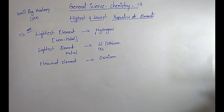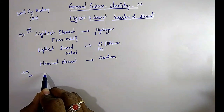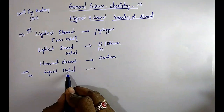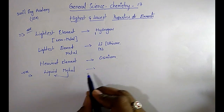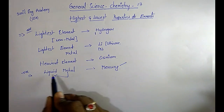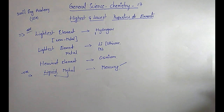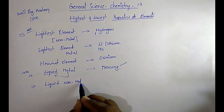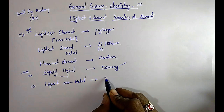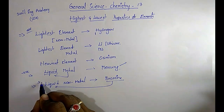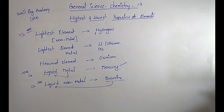Which element is a liquid metal? A liquid metal means the element is a metal and also in liquid form. That is mercury. Mercury is a metal and it is in liquid form, so it is the liquid metal. The liquid nonmetal is bromine. Bromine comes under nonmetal and it is in liquid form. So, liquid metal is mercury and liquid nonmetal is bromine.